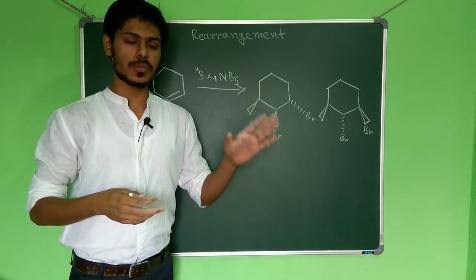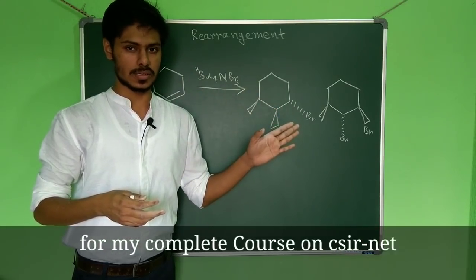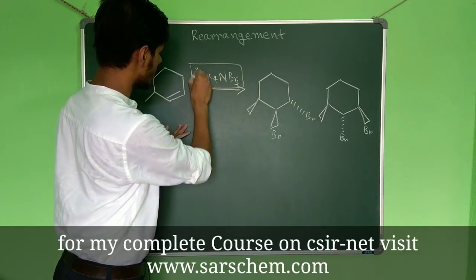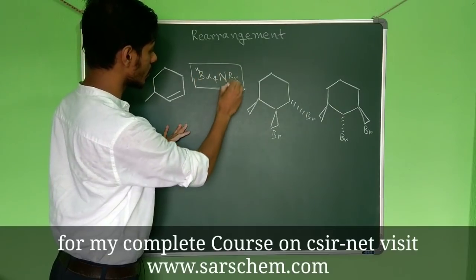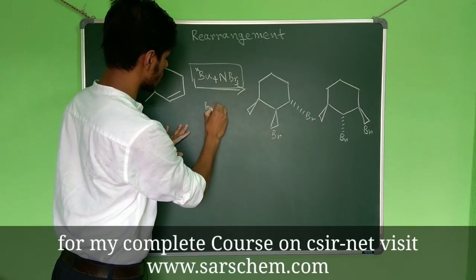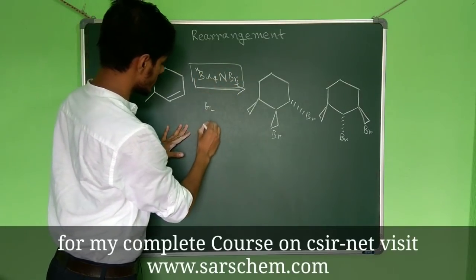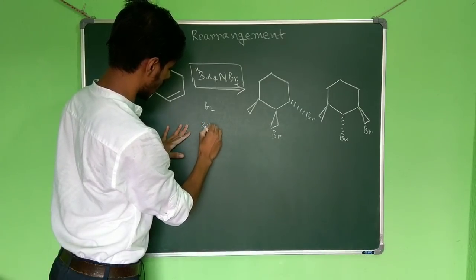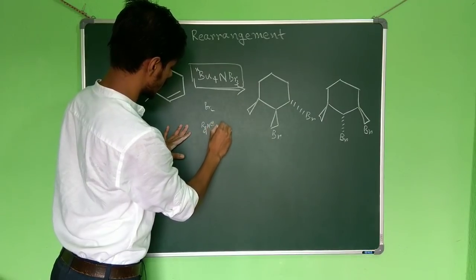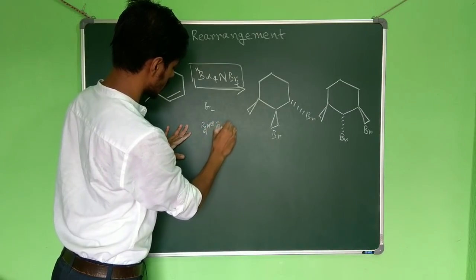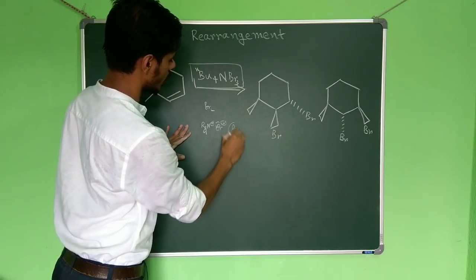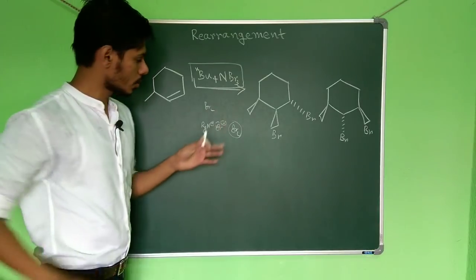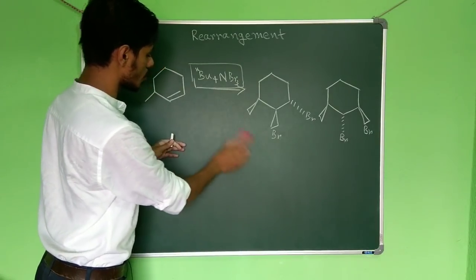First, let us be familiar with this substrate. This is a generator of Br₂ — it is like R₄N⁺Br⁻, and another Br₂ molecule is coordinated with that. So it is simply a source of bromine. You don't have to worry about that — it is just a source of bromine.